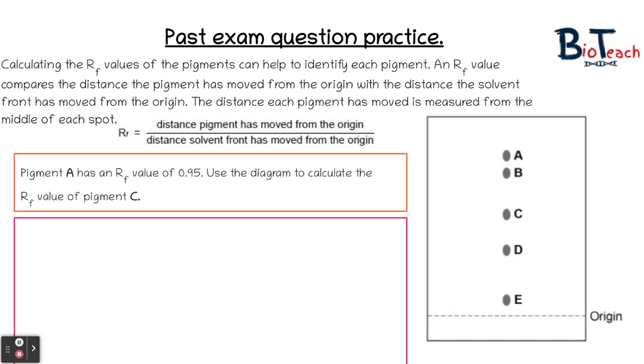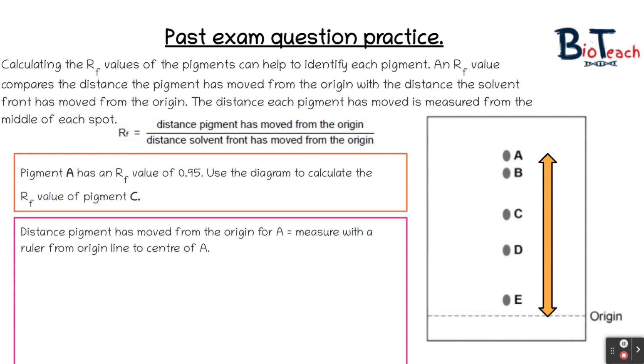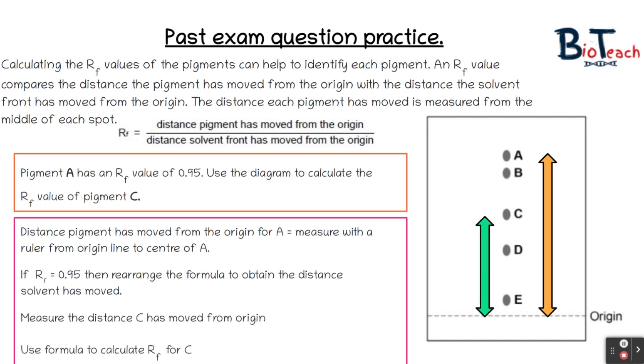Now the question for this is to basically say that pigment A, which is the top dot in the chromatogram that you can see there, has an RF value of 0.95. Use the diagram to calculate the RF value of pigment C. Now as you can see from the formula, you are missing some key pieces of information. I've already got the RF value as 0.95, so all I need to do is measure from the origin and that will give me the distance pigment has moved, and then what I need to do is rearrange the RF formula to obtain the distance that the solvent has moved. Once I've got the distance that the solvent has moved, if I then measure C from the origin, I can use that measurement to then calculate the RF value for C. I've already worked out the distance the solvent has moved from the origin, so I can basically plug that into the formula and work out what the distance is. Hopefully that's been quite helpful for you to see how you can use the RF formula to calculate the retention factor, but also how you can rearrange this formula to work out any of the other two factors that are involved in that as well.